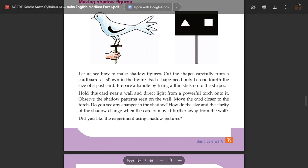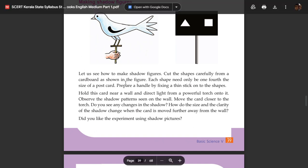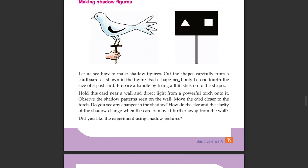Let us see how to make shadow figures. Cut the shapes carefully from cardboard as shown in the figure. Each shape needs only be one-fourth the size of a postcard. Prepare a handle by fixing a thin stick onto the shapes.